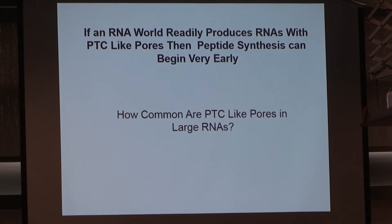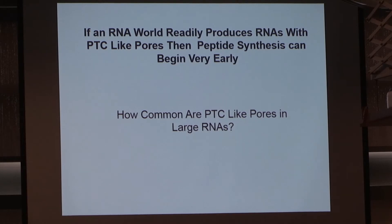If the RNA world could readily produce RNAs with PTC-like pores, that would be really important because it would mean that peptide synthesis could get started very early. Incidentally, if I believe in an RNA world at all, I believe in an abbreviated RNA world, because I think the first thing an RNA world would invent would be peptide synthesis — and as soon as you invent peptide synthesis, you don't have an RNA world anymore. So we raised the question: how common are PTC-like pores? Do RNAs readily make this kind of pore?